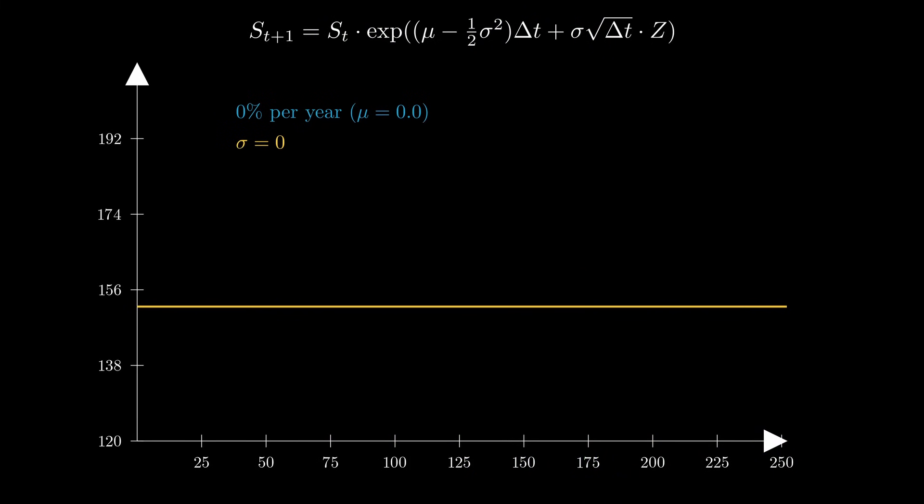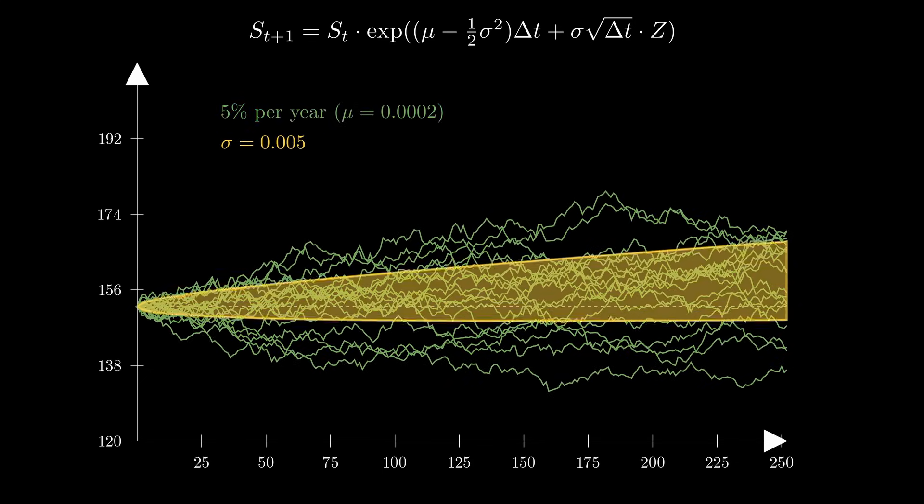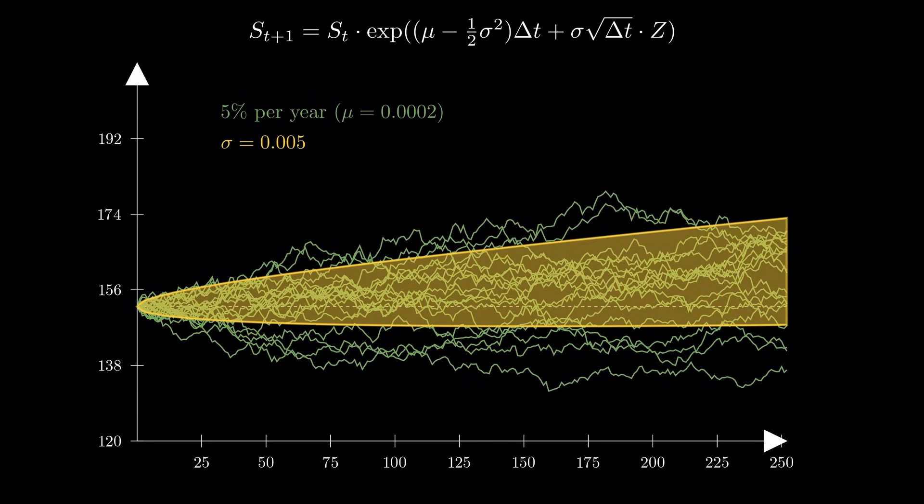If we activate both the parameters, we can see that the average price exponentially grows. But there are still many sample paths that stretch far below the starting price.